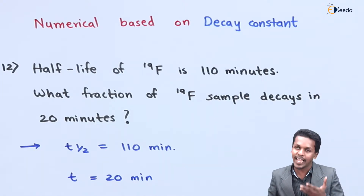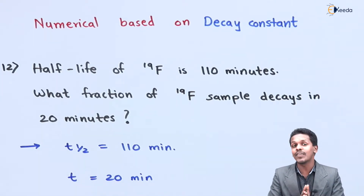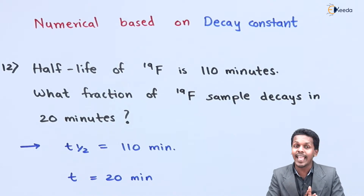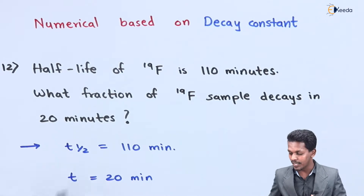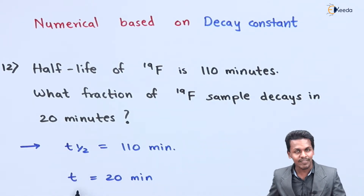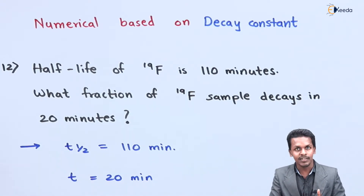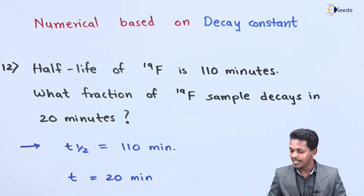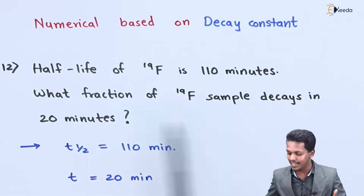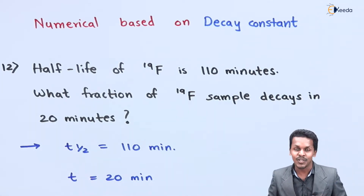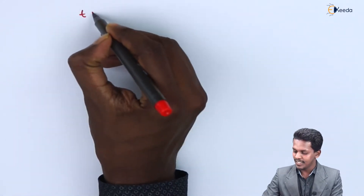We need the fraction of the Fluorine sample that has decayed. We don't have the value of N₀ or N individually, but we can find the ratio N₀/N using the decay constant calculated from t½ and the given time. Once we have lambda and N₀/N, we can find the fraction decayed in 20 minutes.